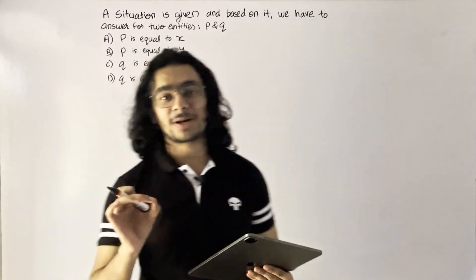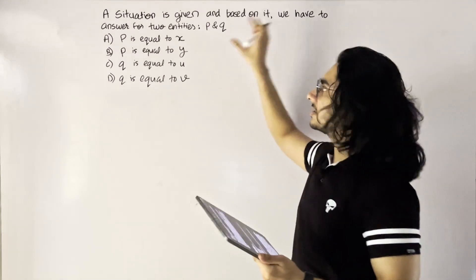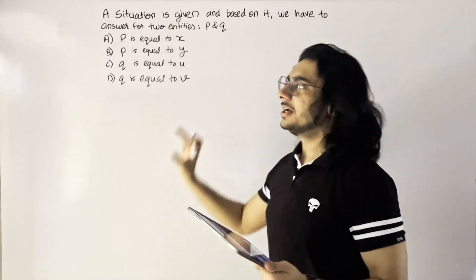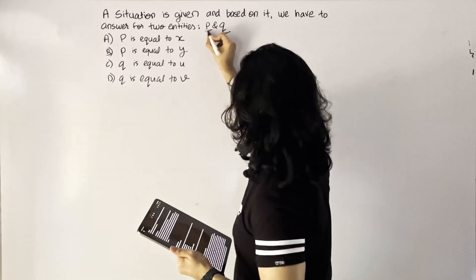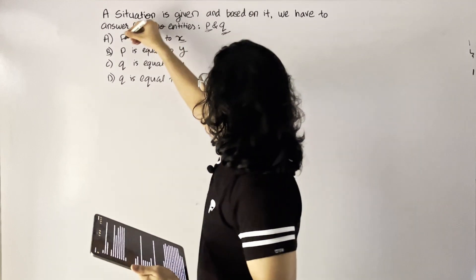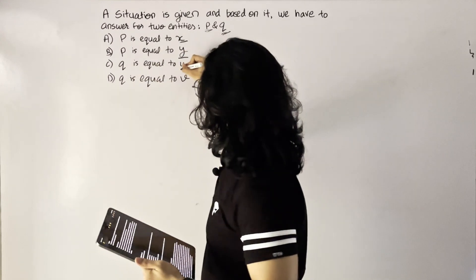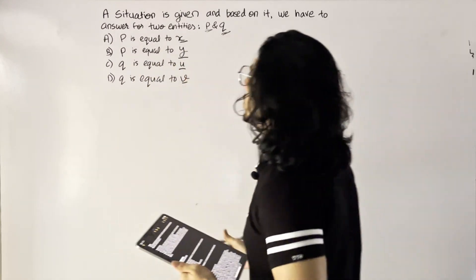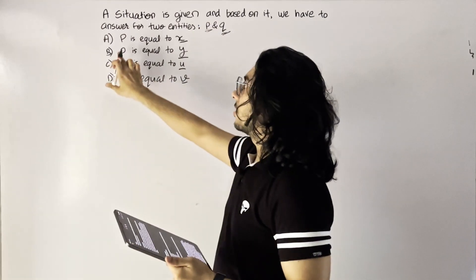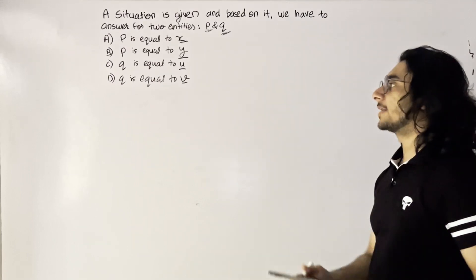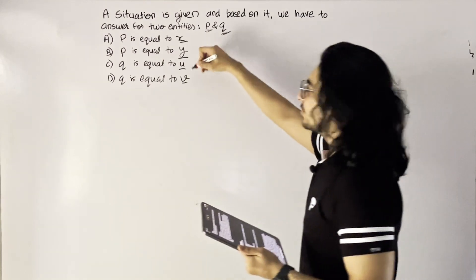This video is going to address multiple correct questions. We have a generalized situation — it could be any numerical question — and based on it we have to answer for two entities P and Q. We have four options: A: P = X, B: P = Y, C: Q = U, and D: Q = V. So X, Y, U, V are some random values.